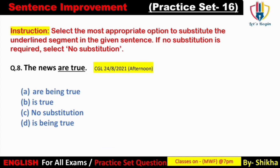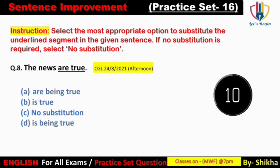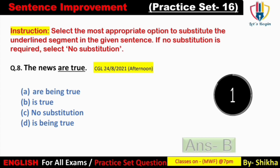Next: 'The news are true.' 'News' uncountable hota hai, isi liye iska kabhi plural form nahi banaya ja sakta. Iske saath 'is' aana chahiye. Option D mein 'is being true' — yeh galat hai; yahan simplest form use karenge. Answer: option B — 'The news is true.' News sach hai.